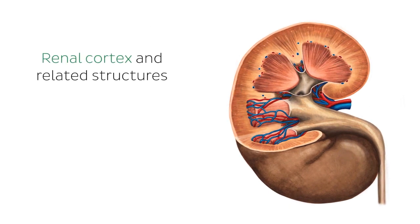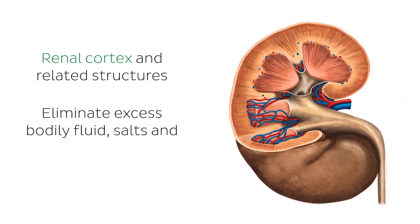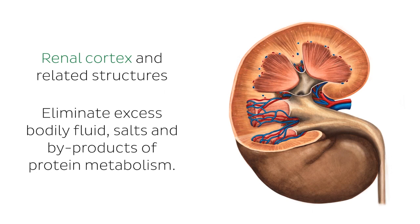As you probably know, the kidneys are bilateral organs of the urogenital system. They are located in the retroperitoneal region of the abdomen, and their main function is to eliminate excess bodily fluid, salts, and byproducts of protein metabolism.